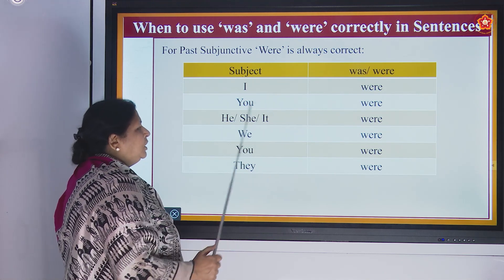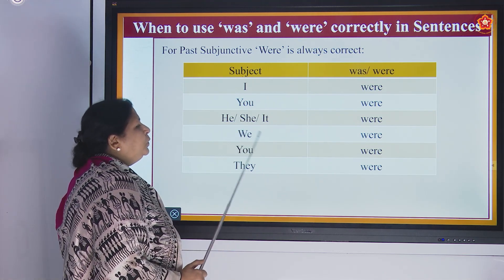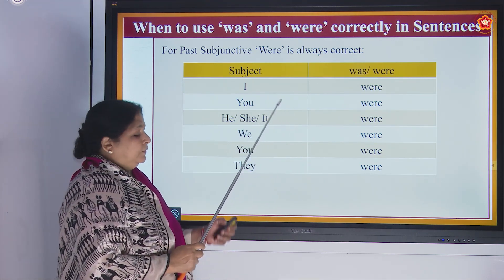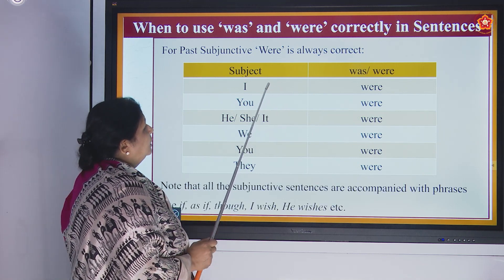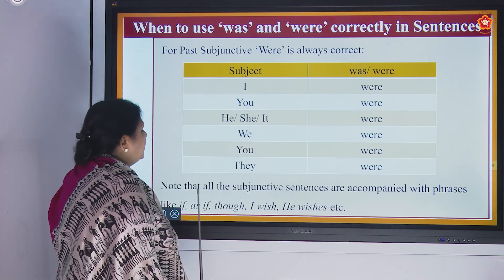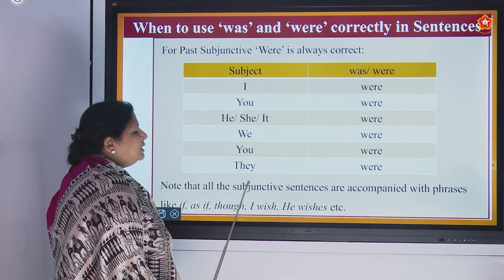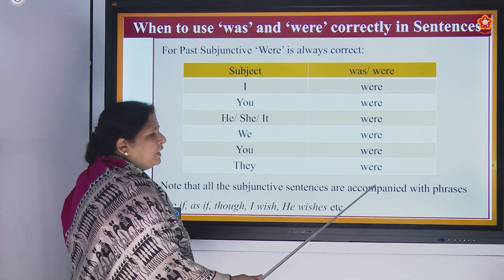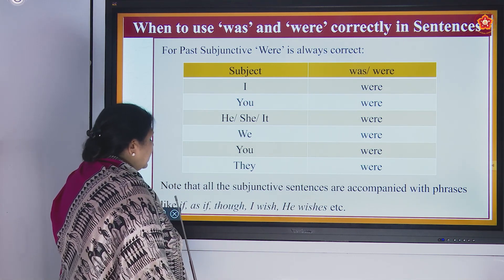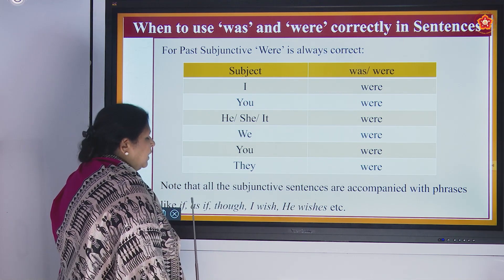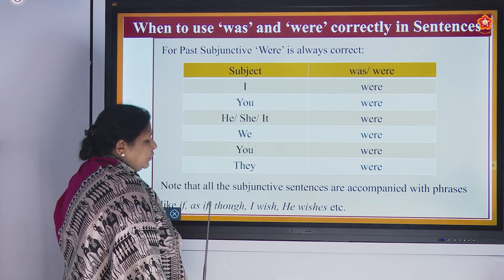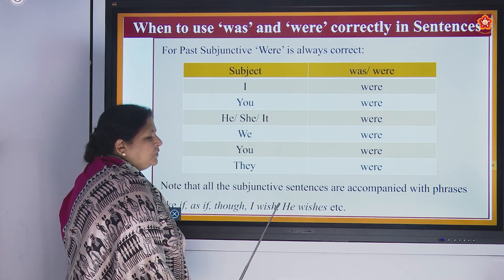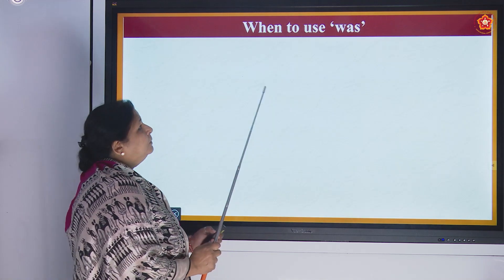'He', 'she', 'it' — were. 'We' — were. 'You' — were. 'They' — were. Note that all subjunctive sentences are accompanied with phrases like if, as if, though, I wish, he wishes, etc.